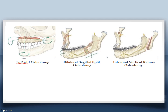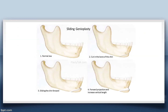Bilateral sagittal split osteotomy is performed in the mandible. An L-shaped section is made on both sides of the mandible, the segment is then either pushed backward (for prognathism) or advanced forward (for retrognathism), depending on the clinical situation.